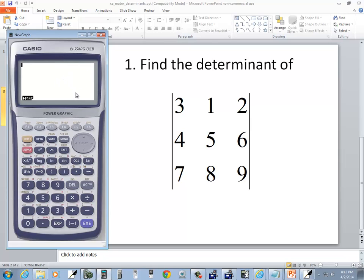And that's how you find determinant on a Casio FX, I believe, 9860G calculator. Thank you.